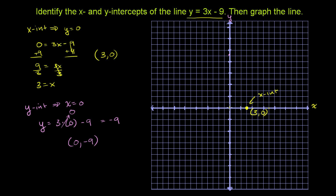So when x is 0, we go down 9 for y. 1, 2, 3, 4, 5, 6, 7, 8, 9. So right there is the point 0 comma negative 9. Notice it sits on the y-axis. That's why it's the y-intercept. And the x-value is 0. We haven't moved to the left or the right.